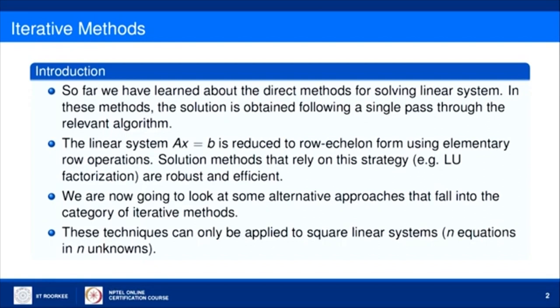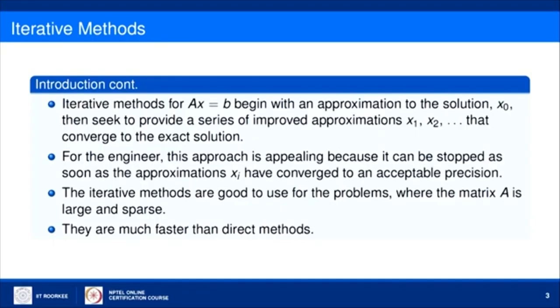In the category of Iterative Methods we can solve a square linear system, meaning N equations in N unknowns. Iterative Methods for A X equals B begin with an initial approximation X_0, and then seek to produce a series of improved approximations X_1, X_2, and so on, that converge to the exact solution or get sufficiently close to it.